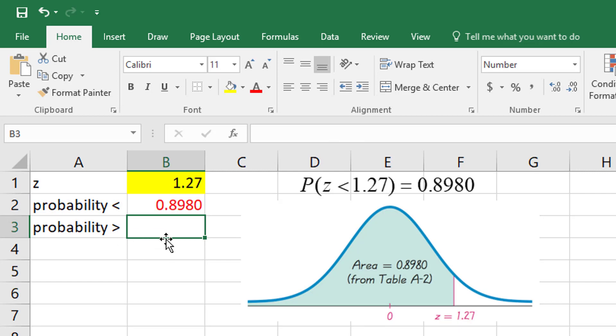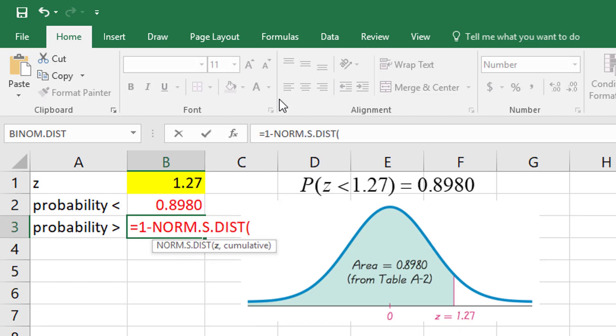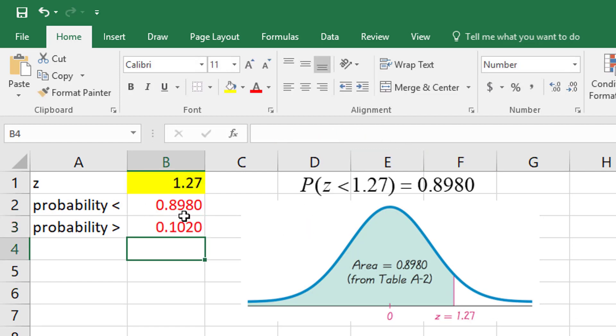You could just do one minus that value, but sometimes you may not want to be bothered. What if you're just looking for the probability that it's greater than? You could just do equals one minus and then type your formula in again, so the NORM.S.DIST, the Z value, and once again I wanted to add from the greater than all the way out to infinity, which is the same as one minus the less than value.